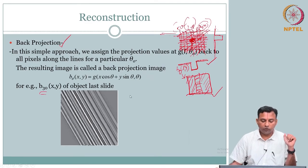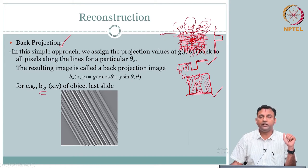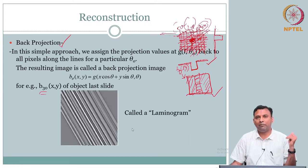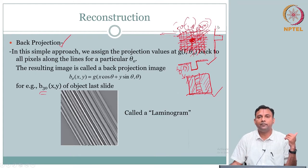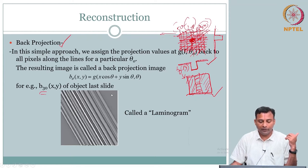This image, for one angle, is called a laminogram because you can see laminate line features. This is just one example — we can do this for all thetas. You can reconstruct B at all the different thetas as well, which will be very similar to this. So you get several different laminograms.